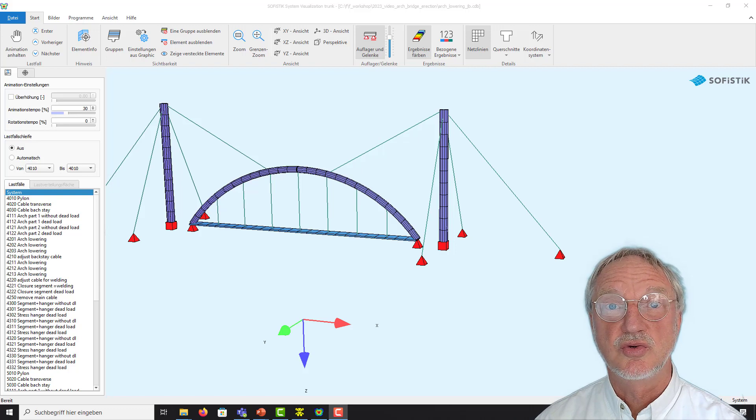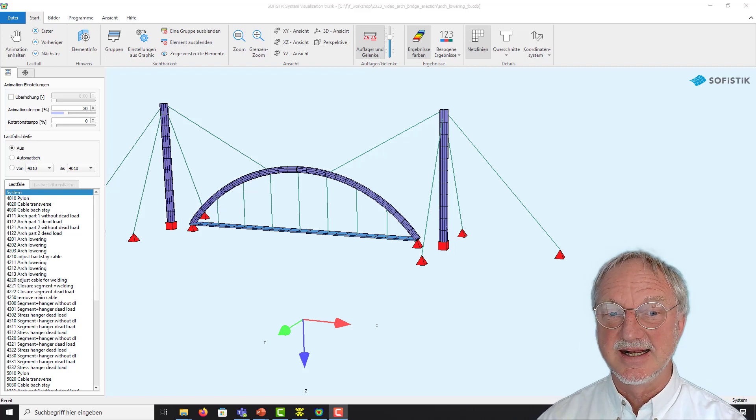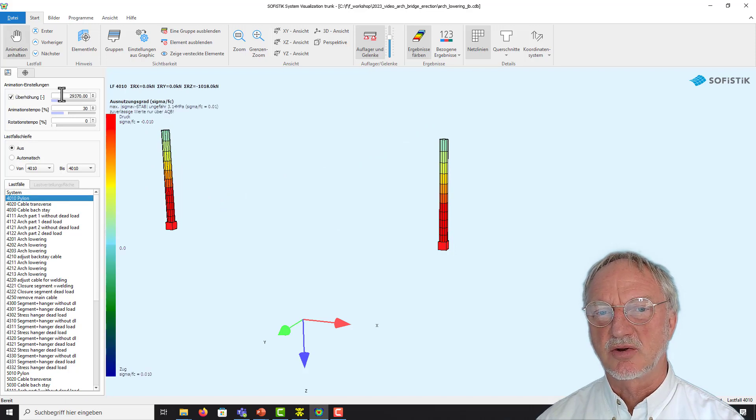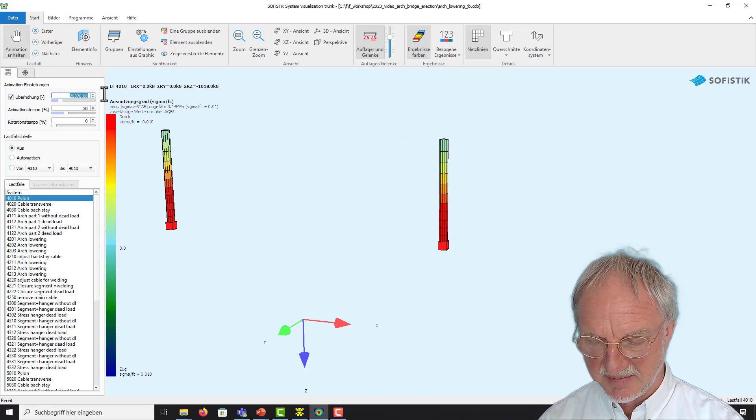Okay. Now let's have a look to our final result. We start erecting the pylon. Make a constant magnitude of maybe 10.